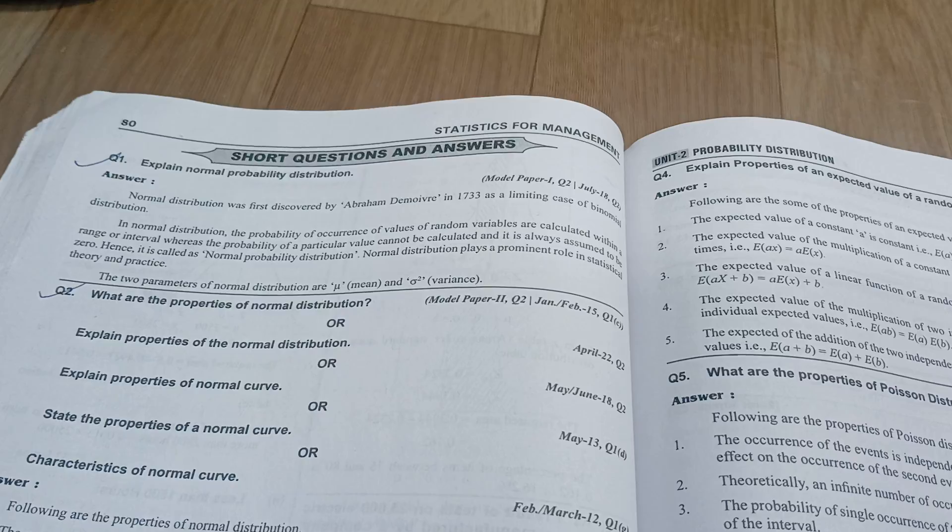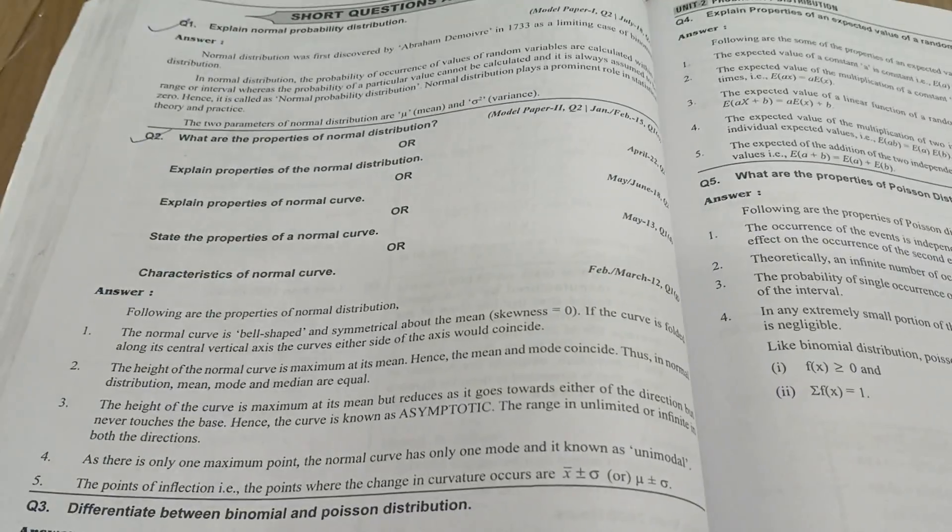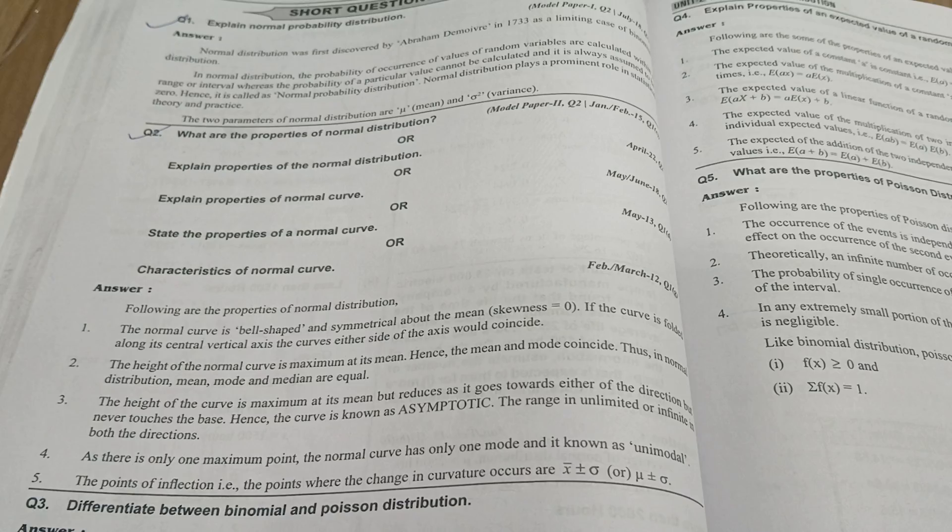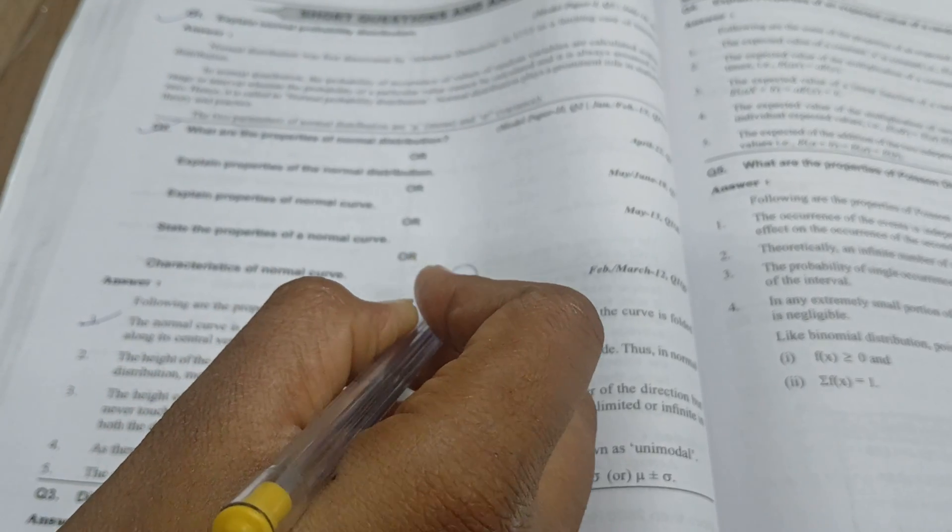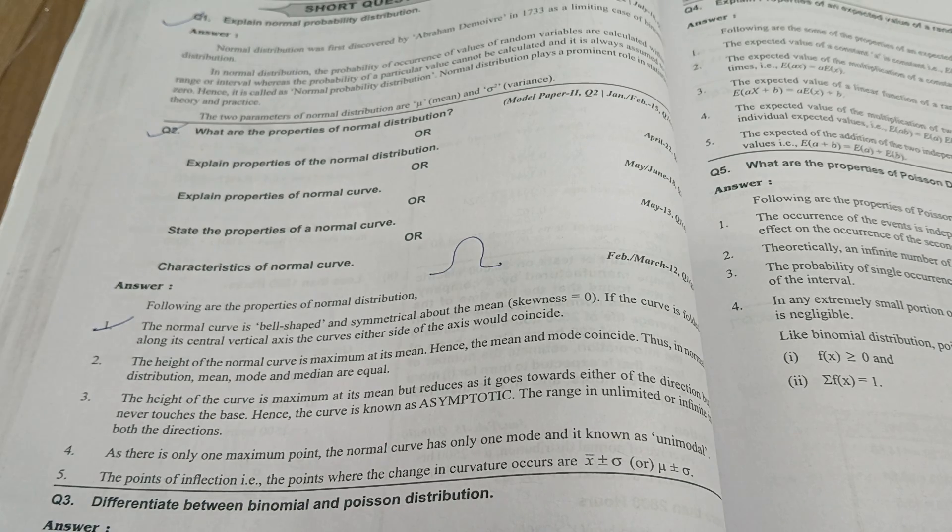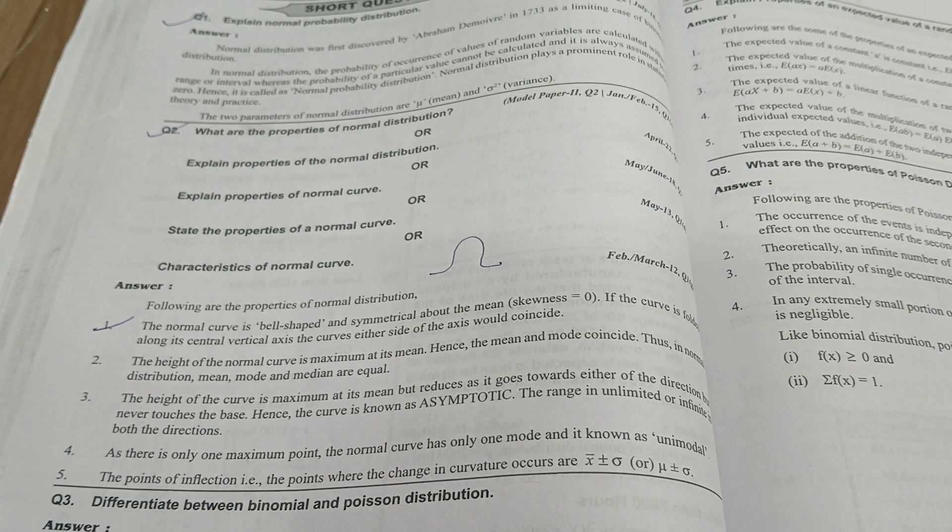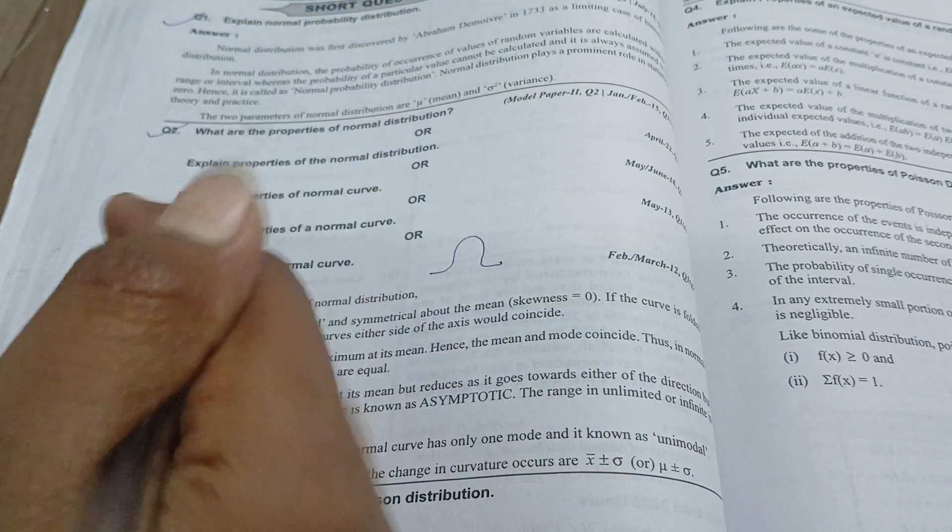Next, properties of normal distribution. The normal distribution or normal curve is bell-shaped. It has maximum at the mean. In a normal distribution, mean, median, and mode are equal.